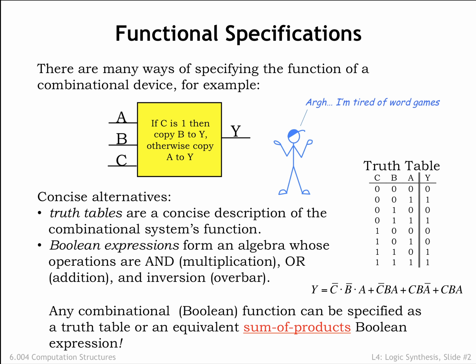For example, to determine the value of Y in the first row of the truth table, we'd substitute the Boolean value FALSE for the symbols A, B, and C in the equation and then use Boolean algebra to compute the result.